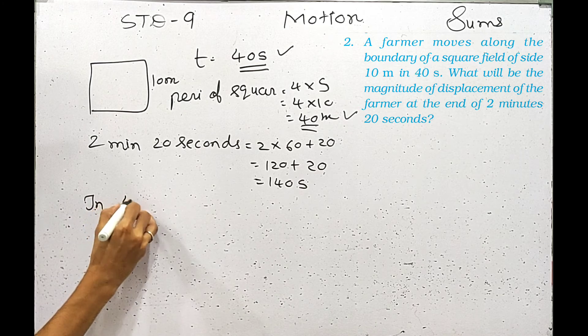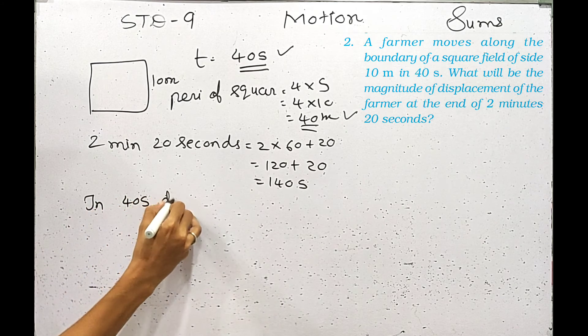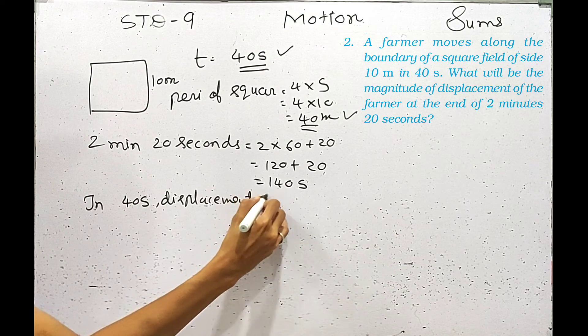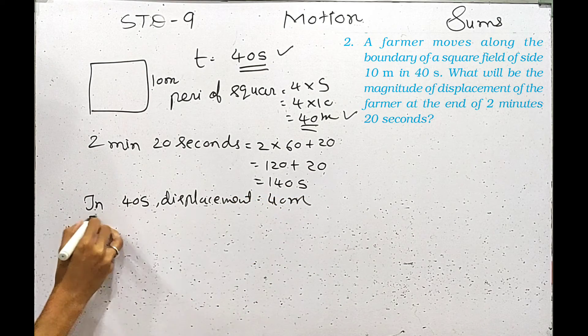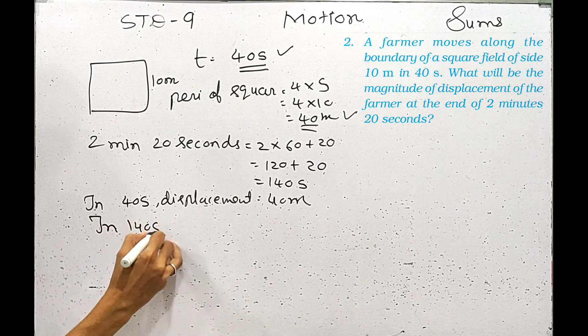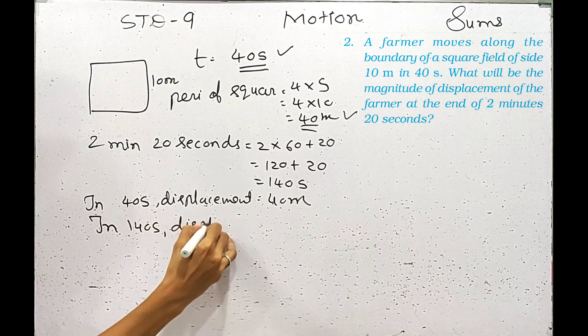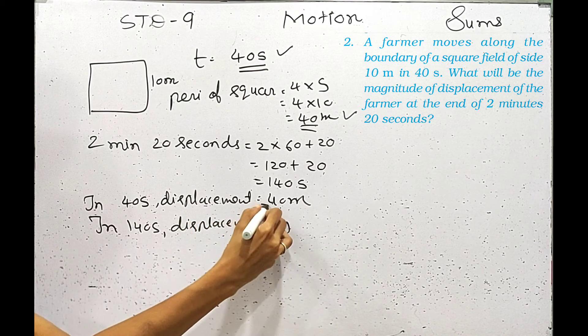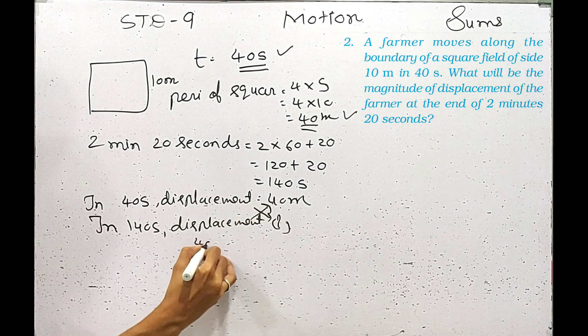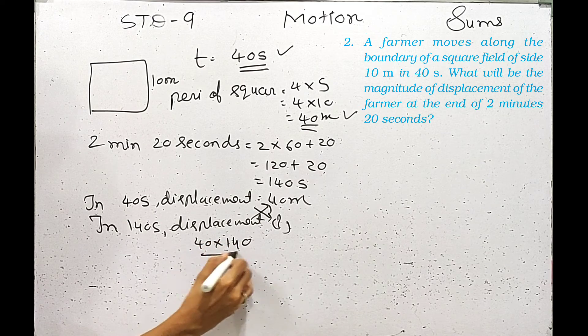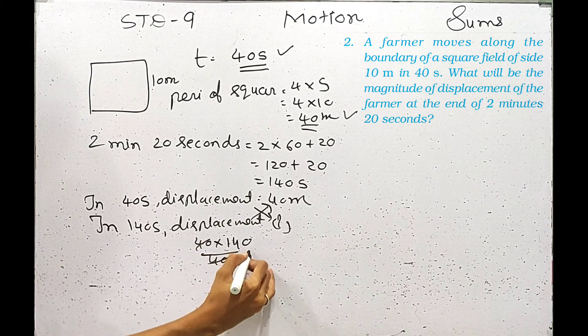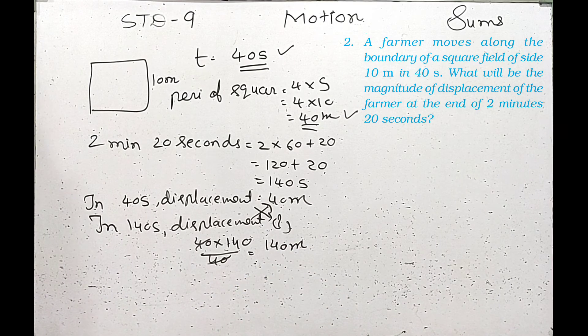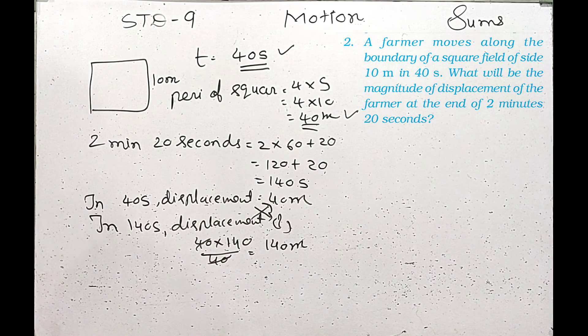In 40 seconds displacement is equal to 40 meters, so in 140 seconds displacement is equal to question mark. This will multiply with this and the lower will be 40 multiplied by 140 divided by 40. So 140 meters is equal to displacement.